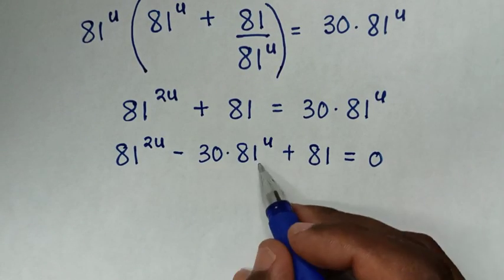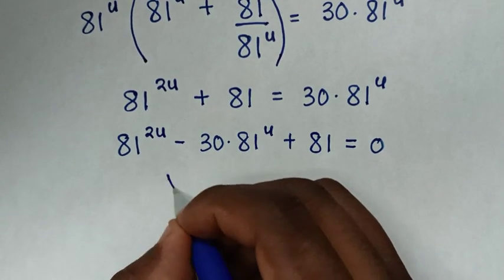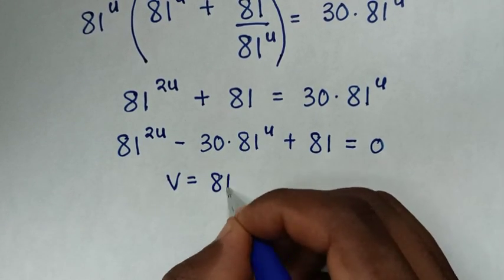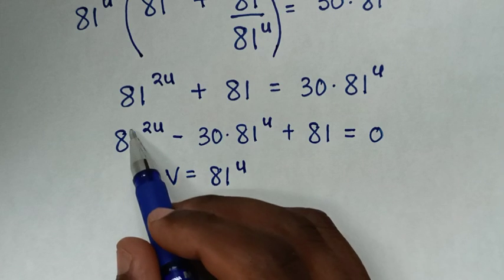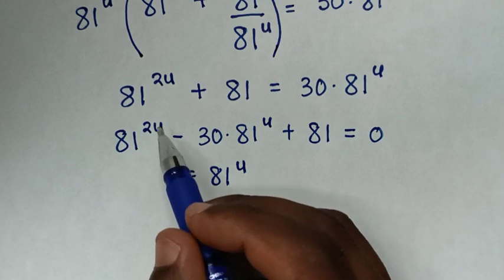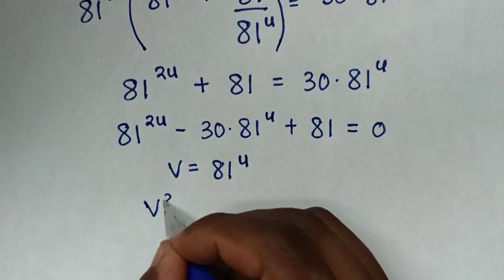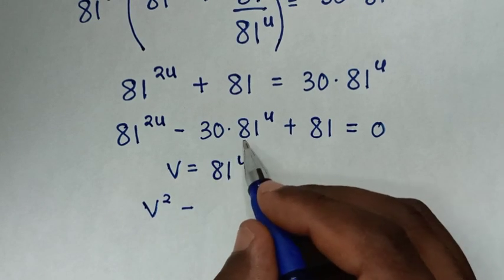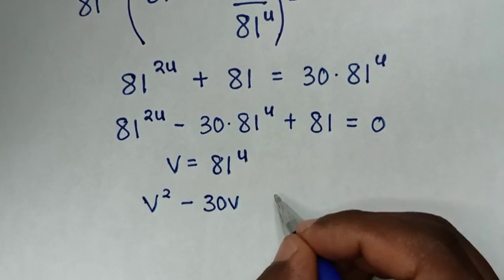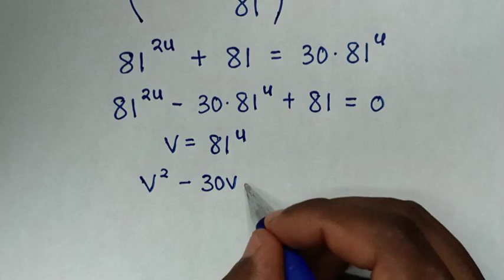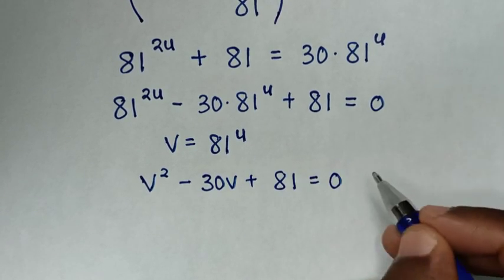Since 81^u is common, we let v = 81^u. Substituting, 81^(2u) becomes v², and the equation becomes v² − 30v + 81 = 0.